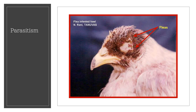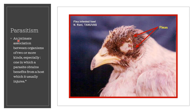Another very important interaction between organisms is parasitism. Parasitism is defined as an intimate association between organisms of two or more kinds, especially one in which a parasite obtains benefits from a host, which it usually injures. The parasite becomes metabolically dependent on the host. The infestation with or disease caused by the parasite is known as parasitosis.